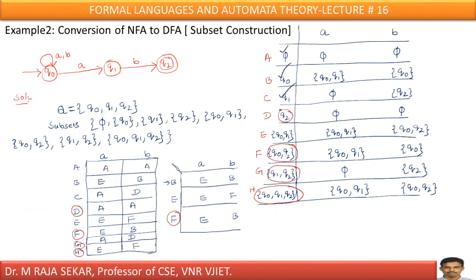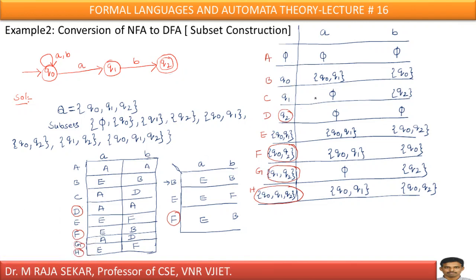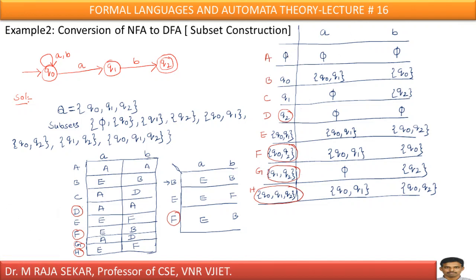Just keep those eight sets like this: empty set, Q0, Q1, Q2, Q0Q1, Q0Q2, Q1Q2, Q0Q1Q2. Which one is the final state? Q2. Wherever Q2 appears, make it final — in whichever set Q2 appears, designate it as a final state. Q2, Q0Q2, Q1Q2, Q0Q1Q2 are all final states. Empty set on any input gives empty set only.